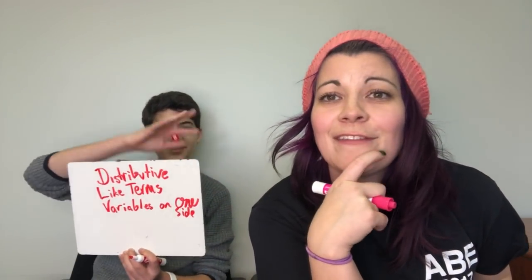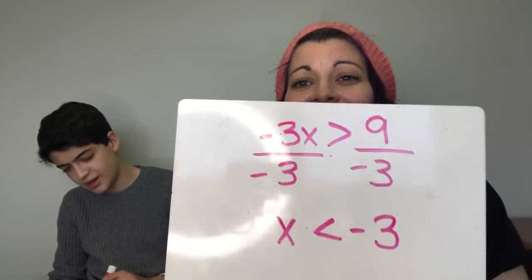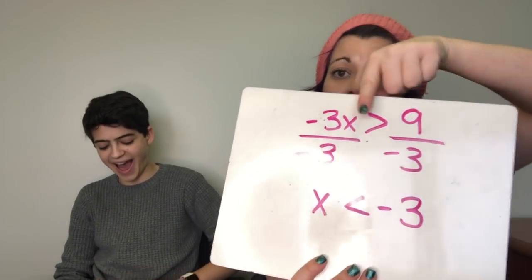Then you just solve like a two-step inequality — you want to isolate the variable. Inequalities have the same steps as equations except for one difference: if you multiply or divide by a negative to solve, then you flip the sign. For example, if you have negative 3x greater than 9, you divide by negative 3 and the sign flips, so it becomes x is less than negative 3. That is the only rule that's different from solving equations.